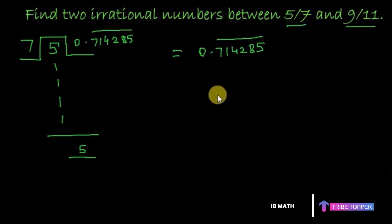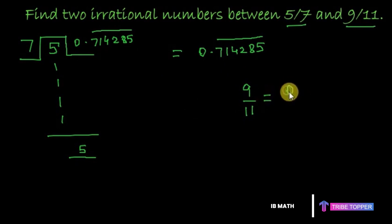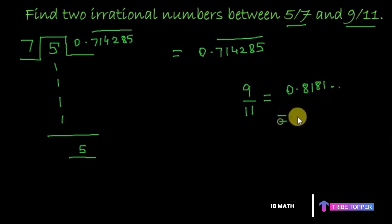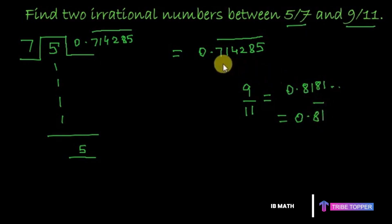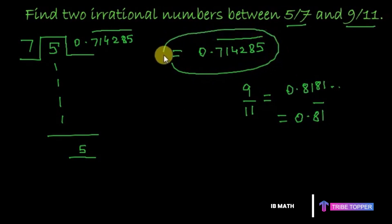Similarly, nine by eleven can be expressed as zero point eight one eight one and so on — therefore nine by eleven equals zero point eight one bar. Now we have to find two irrational numbers between this decimal number and this decimal number.